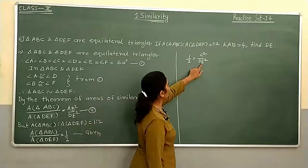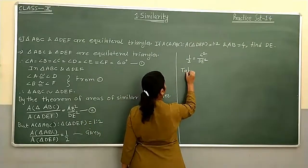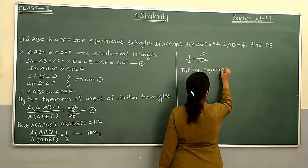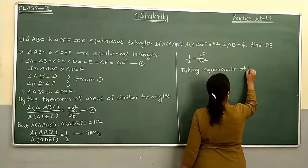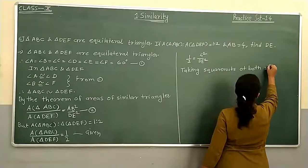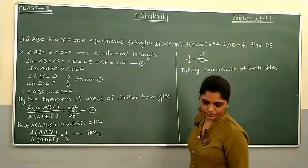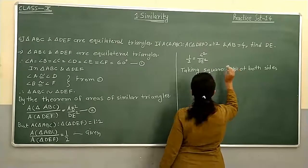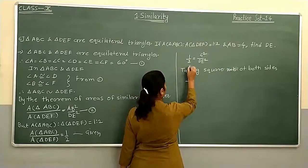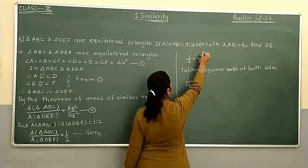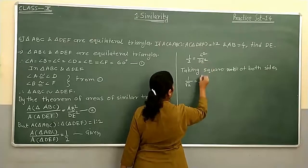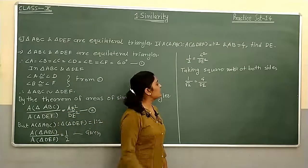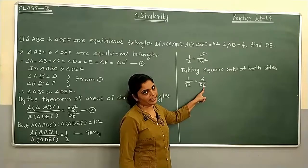We need to find only DE, so we take the square root of both sides. Square root of 1 is 1, square root of 2 is root 2, square root of 4 squared is 4, and square root of DE squared is DE.